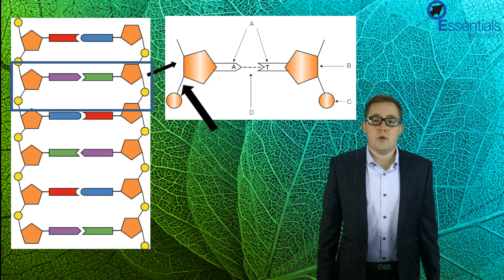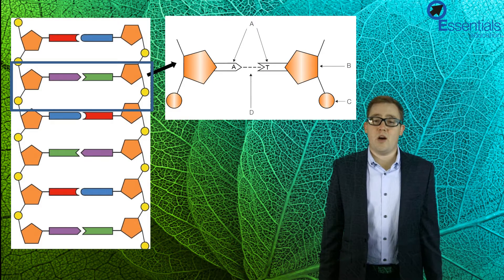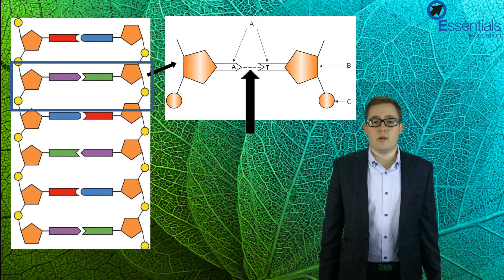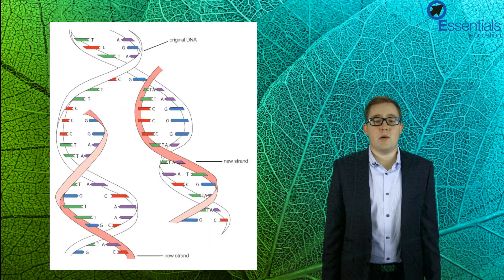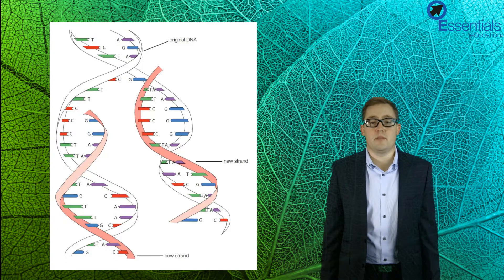There are molecules called nitrogenous bases that are joined in the middle through weak hydrogen bonds seen here. Now these weak bonds are very important as they allow the strands to be separated for processes like DNA replication and protein synthesis, which we'll talk about in later videos.